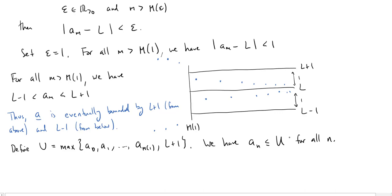Of course, to get a lower bound, and of course, we've already used a capital L, so why don't we use a lower l? We'll make this the minimum of a_0, a_1, through a_m of 1. And then let's toss in big L minus 1, right? That would be the lower bound once we get past m of 1.